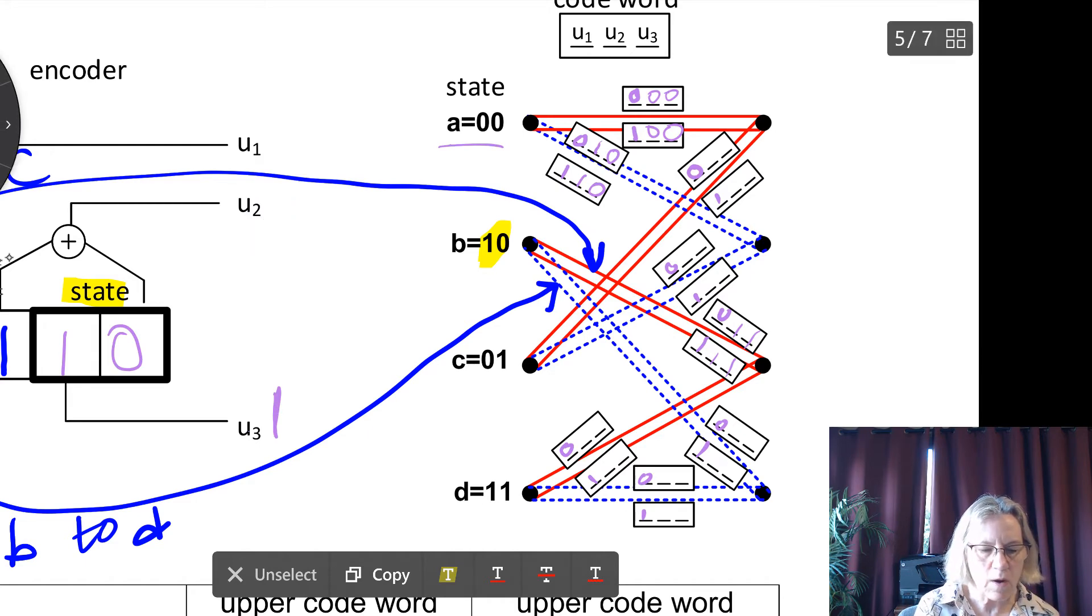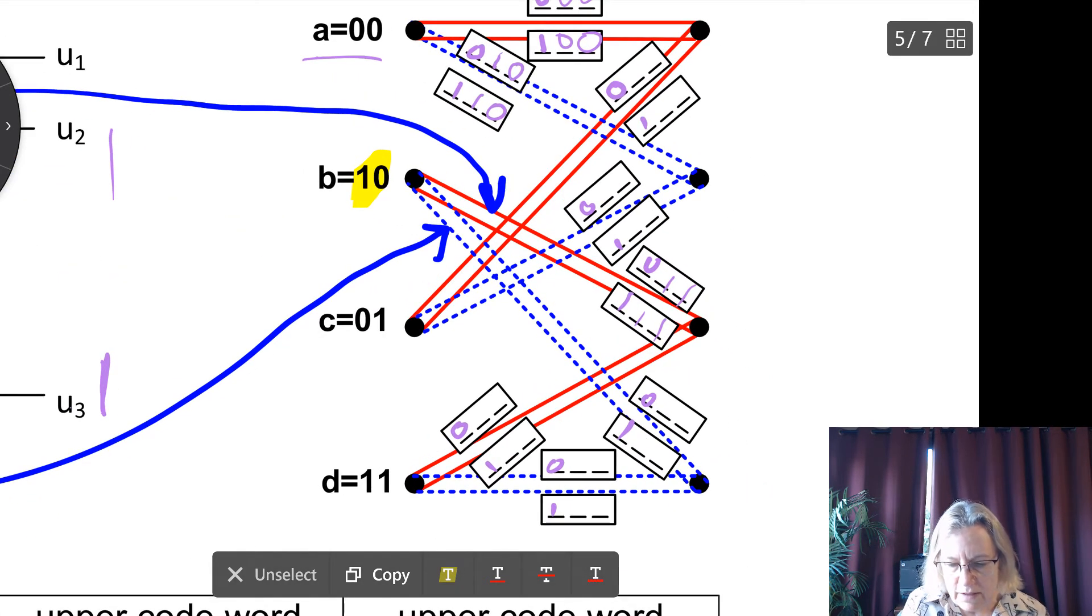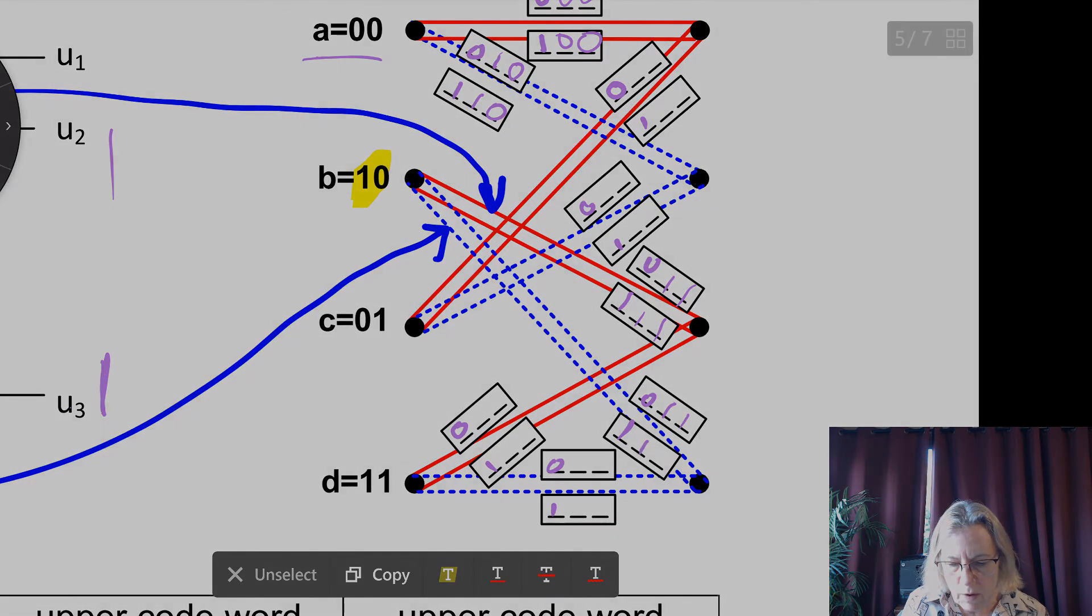In this case, I'm getting 1 plus 0, and that's going to give me, once again, a 1. So for the transition from B to D, I also have now this 1, 1, 1, 1 code.